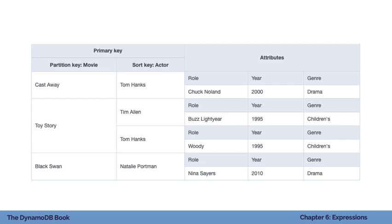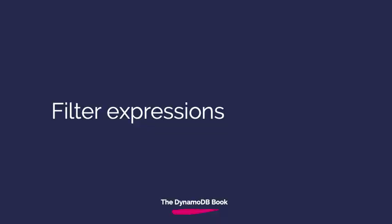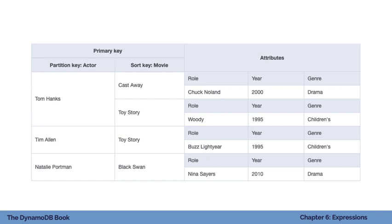You can also use a query on a secondary index, which allows different access patterns. For example, we can create a secondary index on movie roles where movie is the partition key and actor is the sort key, allowing us to efficiently query all actors that were in Toy Story. Moving on to the second type of expression — filter expressions — these can be used with query and scan operations. The interesting thing is you can filter on non-key attributes, not just the primary key.